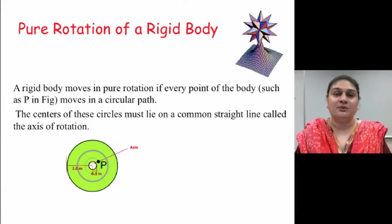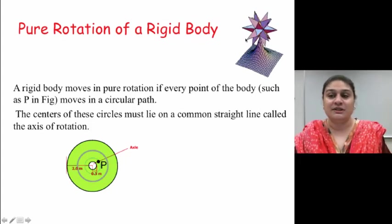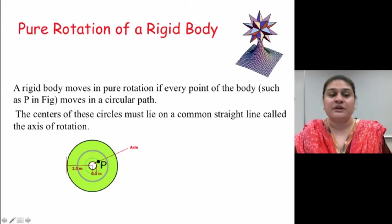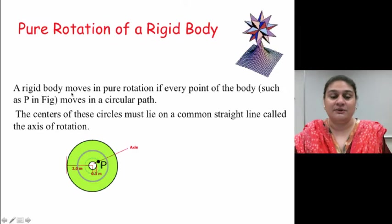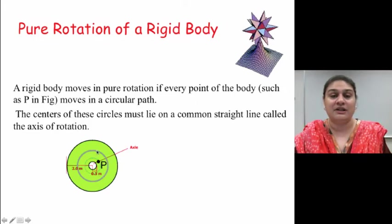So now let's talk about what we mean by when we say a rotation of an object. So an object that is rotating is basically going around and around. For an object, a rigid body moves in pure rotation if every point of the body, such as the point P, moves in a circular path. The centers of all of these circles must lie on a common straight line, which we call the axis of rotation.